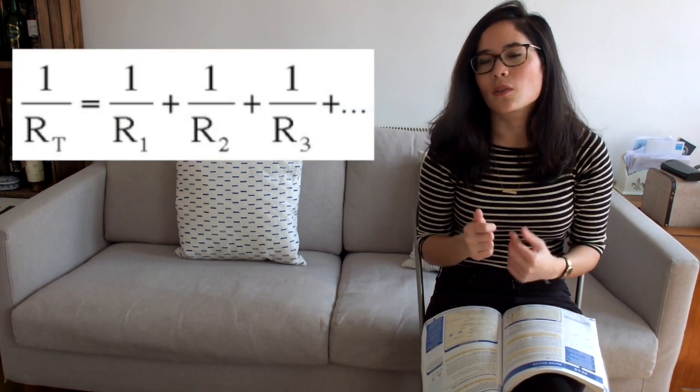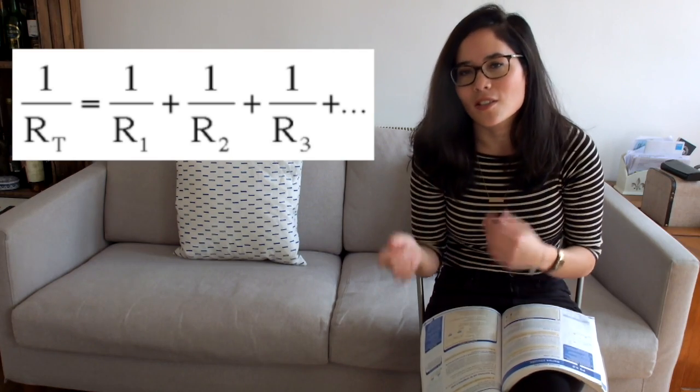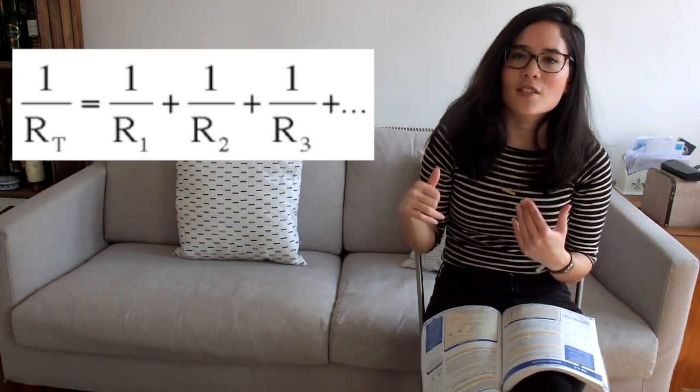What are the resistance rules for a parallel circuit? This is a different equation you're going to have to learn, which is one over R total equals one over resistance one plus one over resistance two plus one over resistance three, depending on how many resistances you've been given.